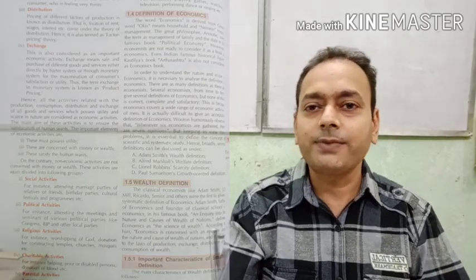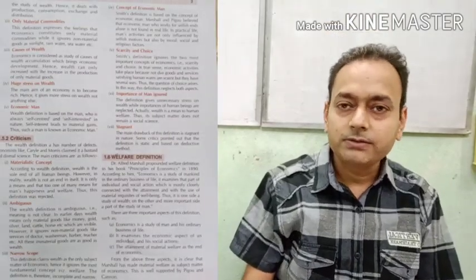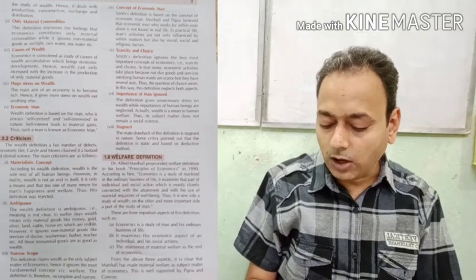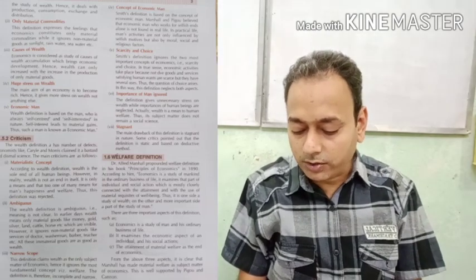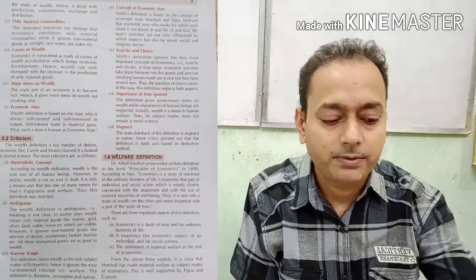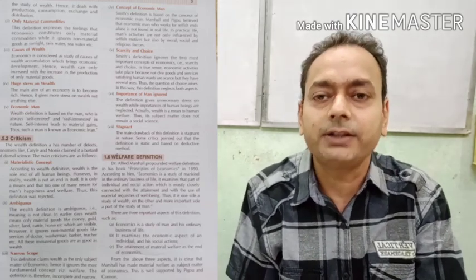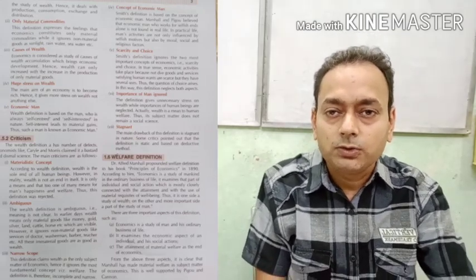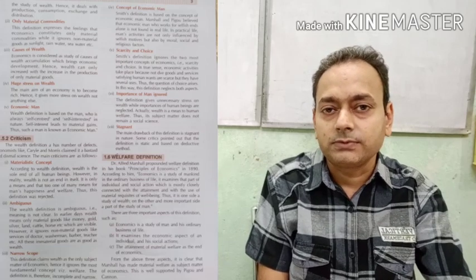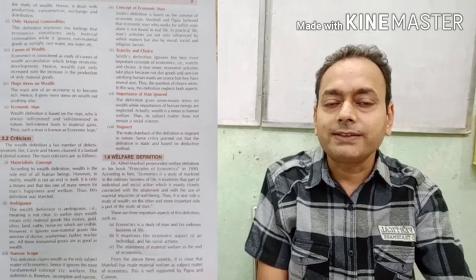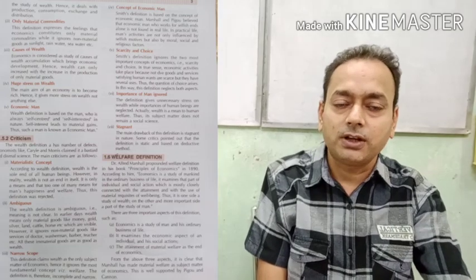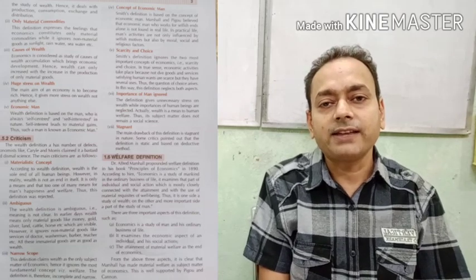The next topic is the definition of economics. According to Adam Smith, the definition of economics is: economics is considered an inquiry into the nature and causes of the wealth of nations. It is related to the laws of production, exchange, distribution, and consumption of wealth. Adam Smith said that economics has the main objective of wealth creation, and the ultimate objective is wealth creation and money earning through economic activities.